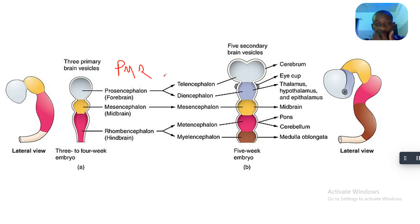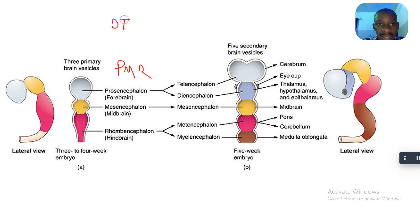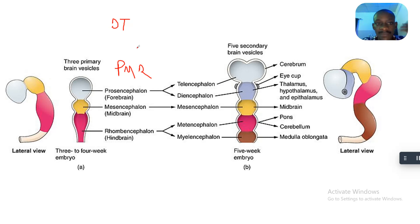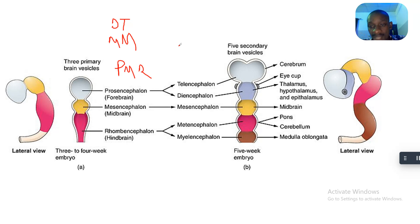The prosencephalon develops into the telencephalon and the diencephalon — remember this as DT. The mesencephalon continues as is. The rhombencephalon develops into the metencephalon and the myelencephalon — my memory aid for that is MM.